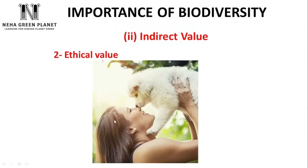Ethical value refers to the moral value — we consider that animals and plants have a moral value attached to them, and we should live and let live other species. This propagation of ethical and moral values from one generation to another is possible only because of the existence of these animals. We also feel sorry for species that are no longer there, like the dodo bird or the passenger pigeon.